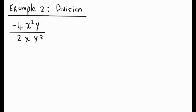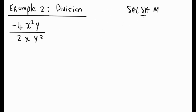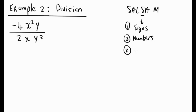Let's look at Example 2. It's a negative divided by a positive. Remember our strategy, which we can call SALSA: number one is signs, number two is numbers, number three is variables.